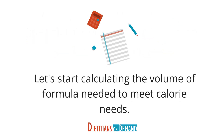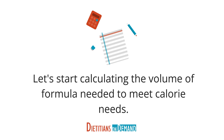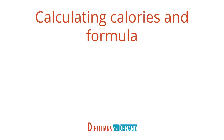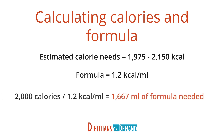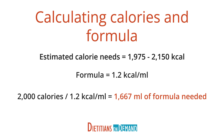Let's start by calculating the volume of formula this patient will need to meet his calorie needs. His calorie needs are 1,975 to 2,150. The formula has 1.2 calories per milliliter, so pick a number in his calorie range and divide it by 1.2. Here's an example: 2,000 calories divided by 1.2 calories per milliliter equals 1,667 milliliters of formula needed.